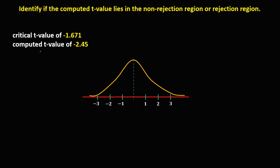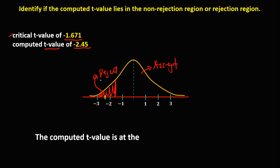For the second given, the critical t-value is negative 1.67. This area beyond negative 1.67 is the rejection region, and this area is the acceptance region. The computed t-value is negative 2.45, and negative 2.45 lies in the rejection region. Therefore, the computed t-value is at the rejection region.